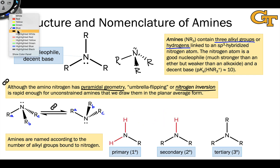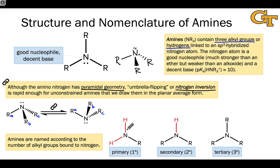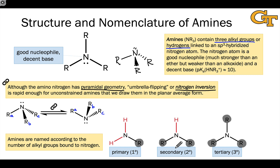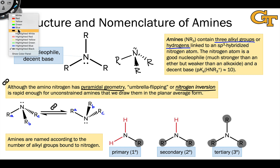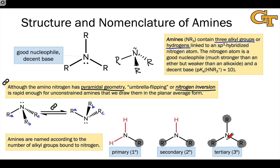An important nomenclature system for amines involves the number of alkyl groups connected to the nitrogen. When only one alkyl group is connected, we call that amine primary. When two alkyl groups are linked to the amino nitrogen, we call that secondary. When three alkyl groups are linked to the nitrogen, we call that tertiary. The number of R groups relates to things like the steric environment of the amino nitrogen — it gets more crowded as we go from primary to secondary to tertiary.